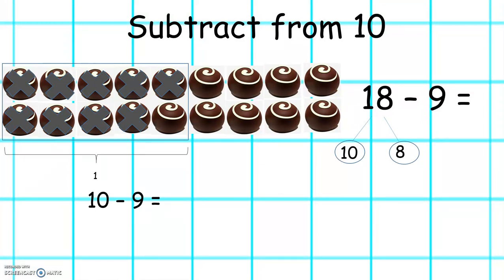So 10 take away 9 equals 1. Outside the box, we have 8. 8 plus 1 equals 9. So 18 take away 9 equals 9.